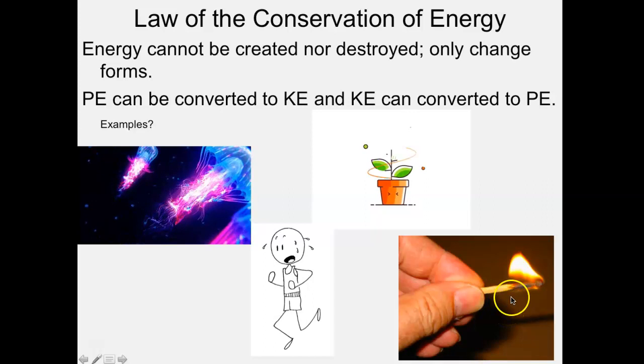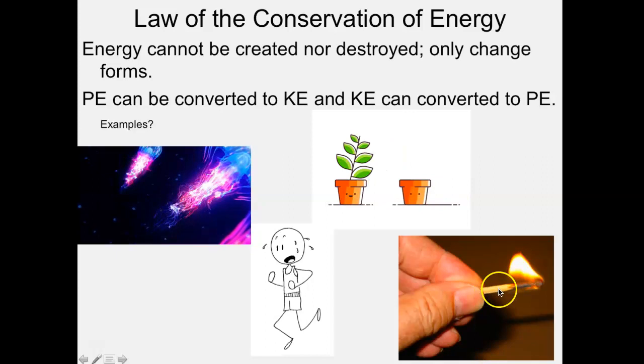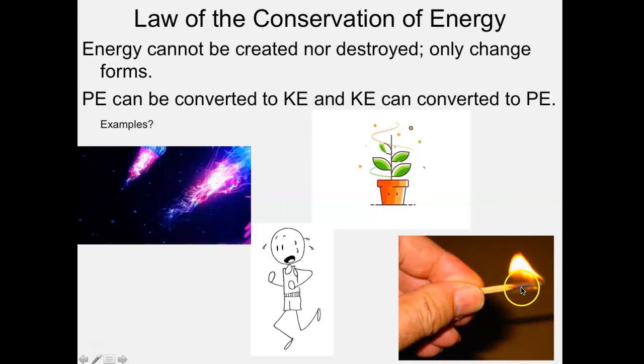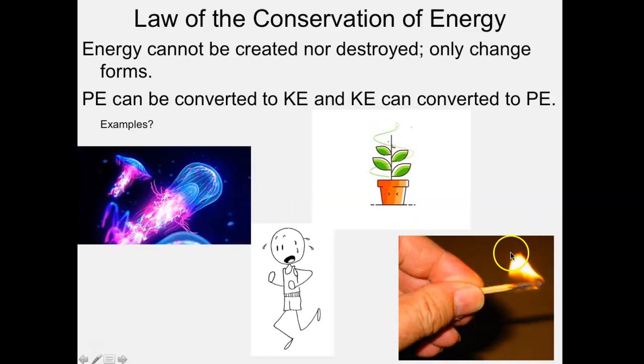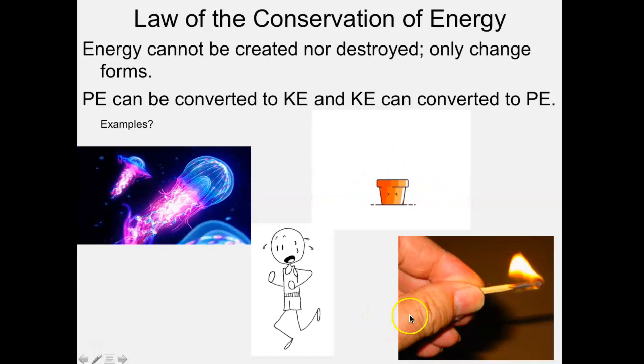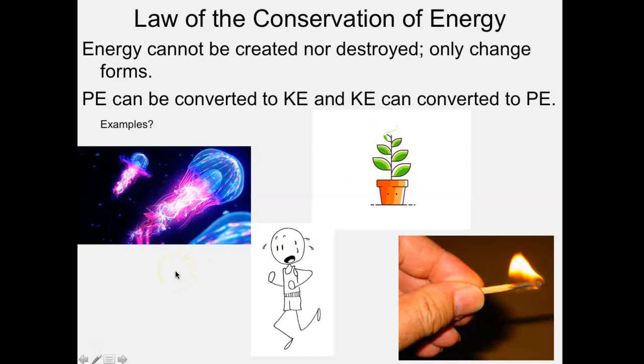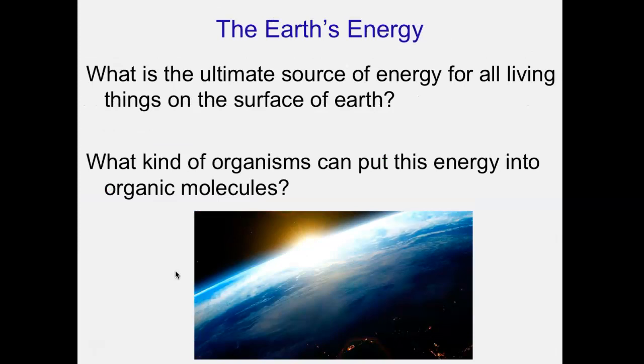We have a matchstick — wood full of potential energy in its chemical bonds. When you strike the match, it gives off both heat and light. Heat is a form of kinetic energy — the most random kinetic energy — and light is also a form of kinetic energy. The match is not a living thing, but the jellyfish, the person running, and the plant are. All living things can convert energy from one form to another.